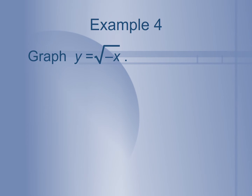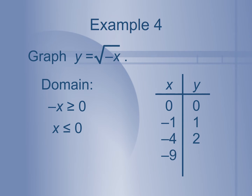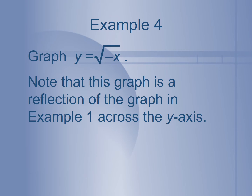Now we're going to graph y equals the square root of negative x. Our domain: since the radicand must be greater than or equal to 0, we solve for x by multiplying both sides by negative 1, which flips the inequality sign to x less than or equal to 0. That means our graph is going to flip over the y-axis. When I plug in negative numbers for x, I get positive y values. So the graph is a reflection across the y-axis — it looks exactly like example 1, just flipped.